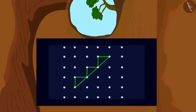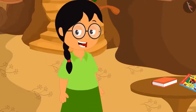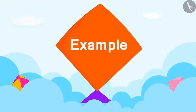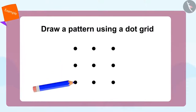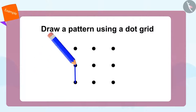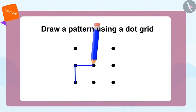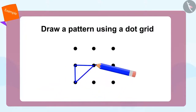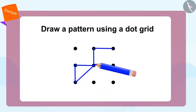She can suddenly see a dot grid behind the pattern on the TV. Let's see how we can make this pattern using the dot grid. First, we will join these two dots and create a vertical line. Now we will draw a horizontal line from this dot. Then we will join these two dots to make a slanting line. Then we will repeat the same method for another triangle. And that's how we make our pattern using the dot grid.